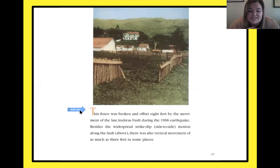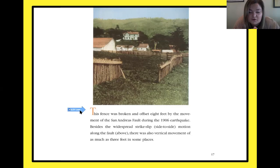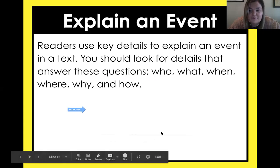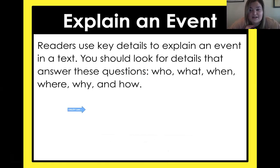It says: 'This fence was broken and offset eight feet by the movement of the San Andreas Fault during the 1906 earthquake. Besides the widespread strike-slip — side-to-side — motion along the fault, there was also vertical movement, as much as three feet in some places.' So the plates moved side to side, but they also moved up — there's that vocab word we learned today: vertical. They've also gone up!